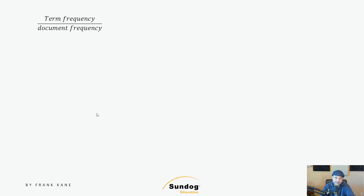Can you think of any problems that might present in the context of searching the entire web? At least two come to mind. One is that this is really easy to game — just load up a page with the keyword you want and make sure it's a relatively obscure keyword and you win. So maybe this could be part of the solution, but certainly something more sophisticated is needed. The other problem is computing the denominator — computing document frequency across the entire internet seems like an intractable problem, or at least one that would require so many resources that we should question if we really need it.